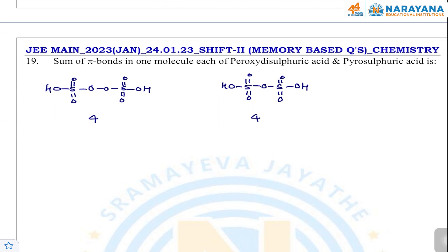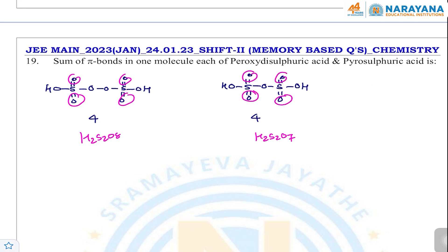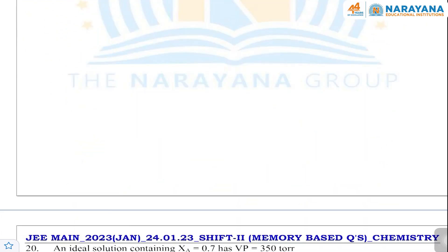The next question: sum of pi bonds in a molecule of peroxodisulfuric acid and pyrosulfuric acid. Peroxodisulfuric acid is H2S2O8 and pyrosulfuric acid is H2S2O7. In H2S2O8 there are 4 pi bonds, and in H2S2O7 there are also 4 pi bonds. The sum is 8.